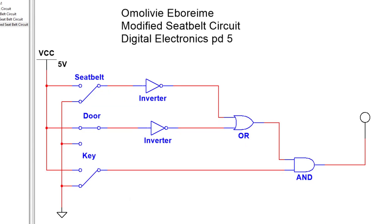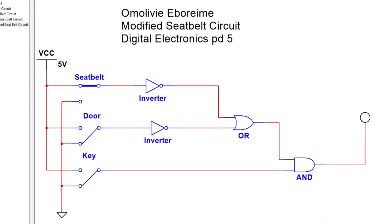Going through the eight permutations of this combination circuit: first, when the seatbelt, door, and key are all at zero — meaning the door is open, the key is not in the ignition, and the seatbelt is not buckled — the buzzer will not go off. Then when the door is open, the key is not in the ignition, but the seatbelt is buckled, it still won't go off.